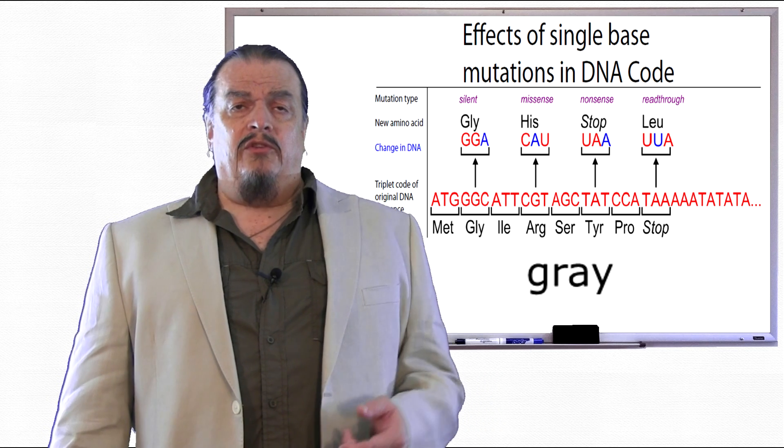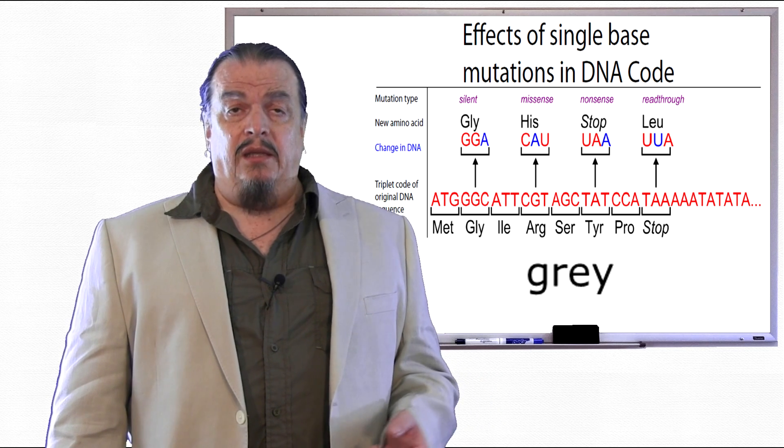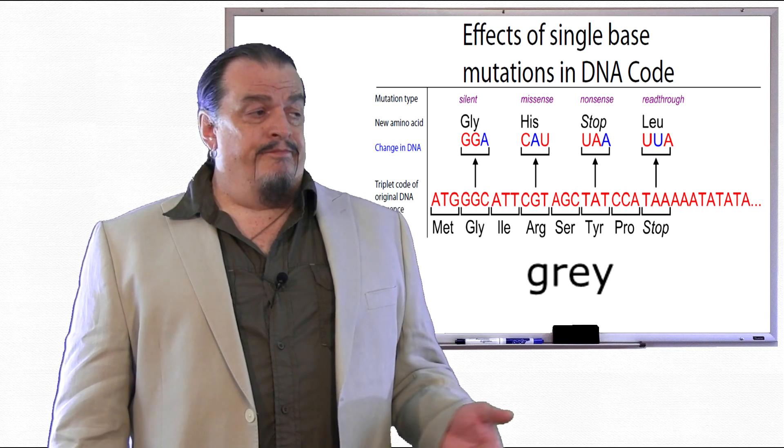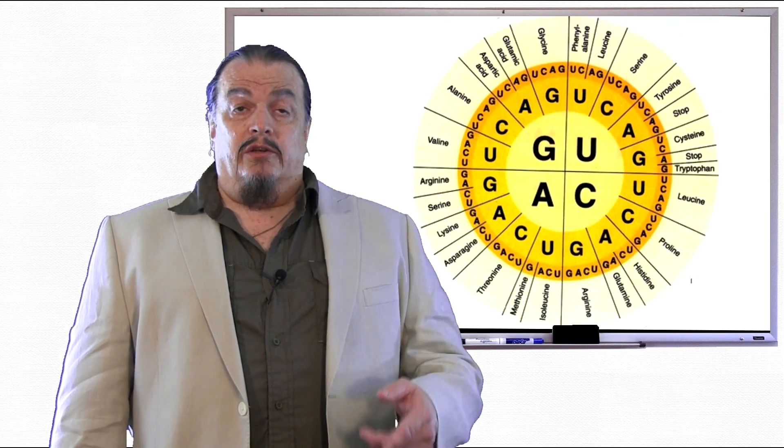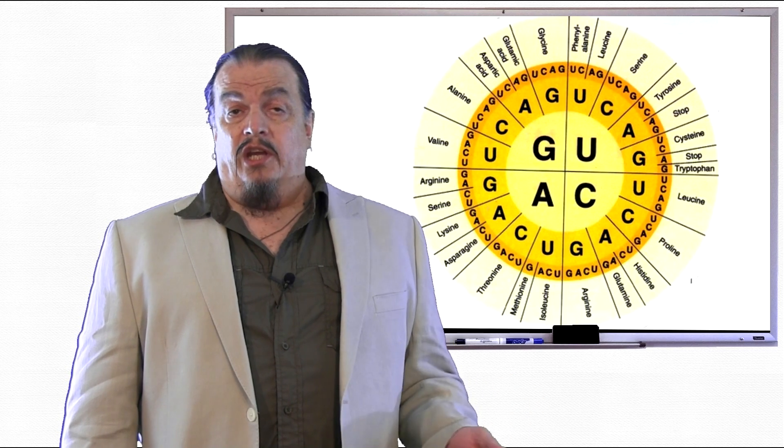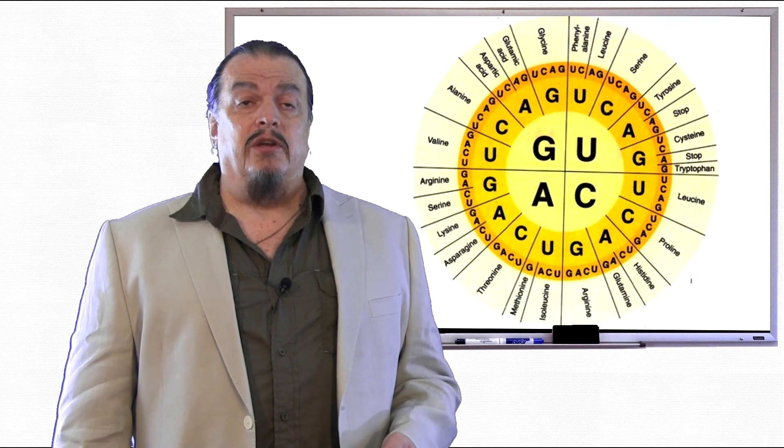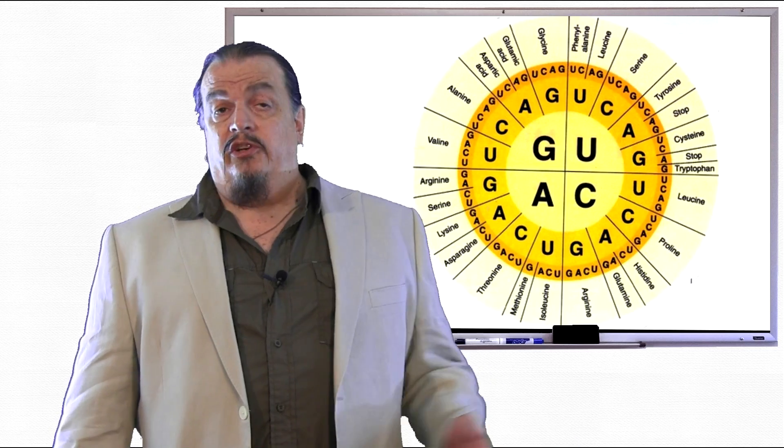For example, if you substitute the letter A in gray with an E, you'll get grey, which doesn't change the meaning of the word. It can be spelled either way. On your codon chart, glycine can be made using the codons GGA and GGC, like we just learned, or with GGU or GGG.